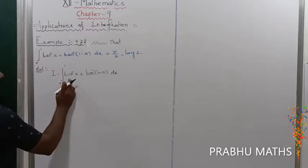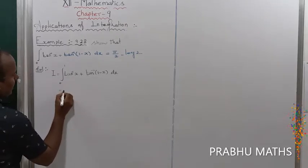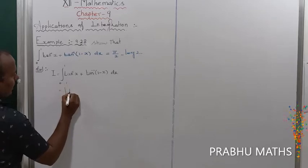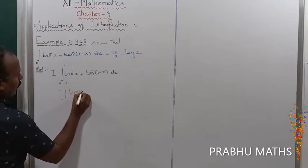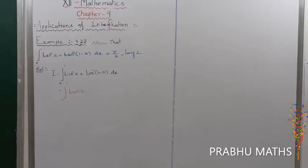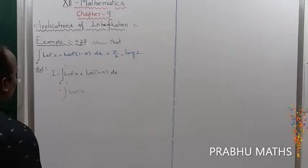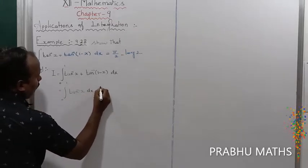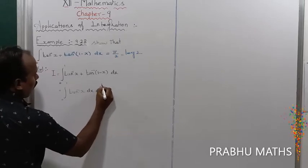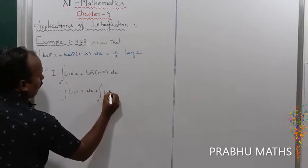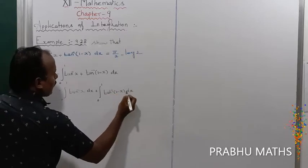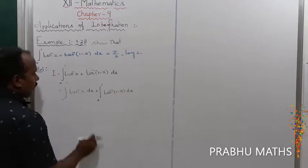So split up the integral value. That is equal to integral half into 0 to 1 of tan inverse of x dx, plus integral half into 0 to 1 of tan inverse of (1 minus x) into dx.